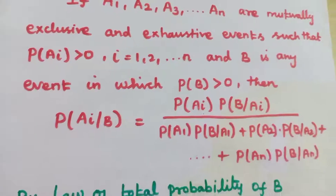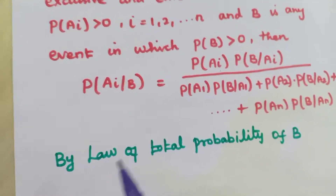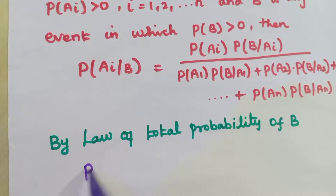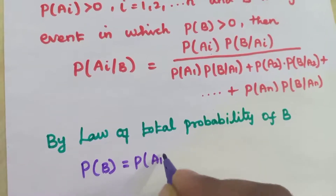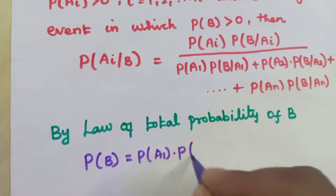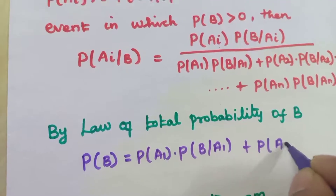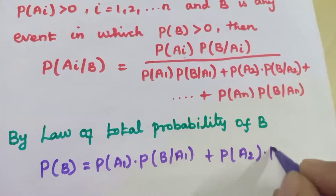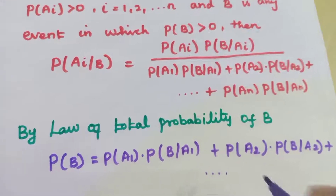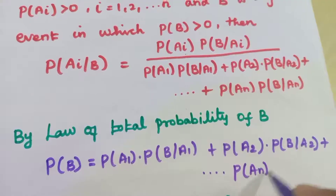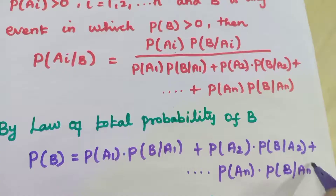How do we get that? First we consider the total probability of B, which we already know from the formula we applied in the first problem. That is, probability of B equals P(A1)·P(B|A1) plus P(A2)·P(B|A2) plus etc. We have N events, therefore plus P(An)·P(B|An).